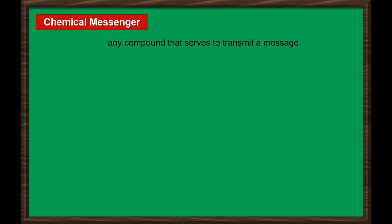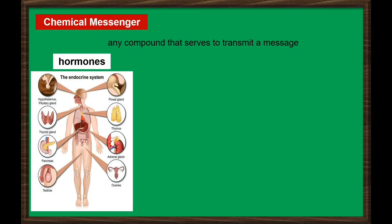Next function is as a chemical messenger. A chemical messenger is any compound that serves to transmit a message. Messenger proteins, such as some types of hormones, transmit signals to coordinate biological processes between different cells, tissues, and organs, such as testosterone, estrogen, and growth hormones. These messenger proteins are very important during feedback mechanisms to maintain homeostasis in the body.